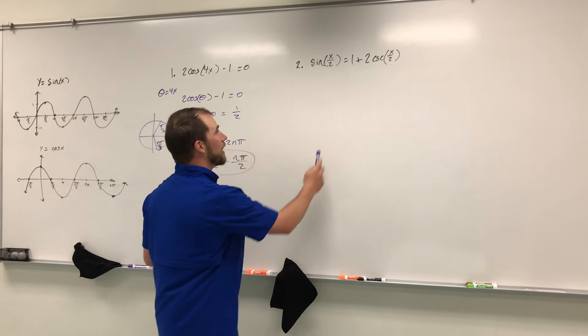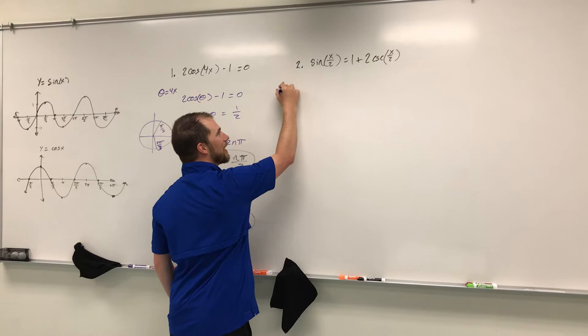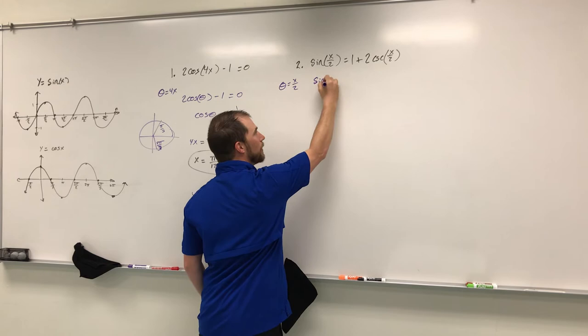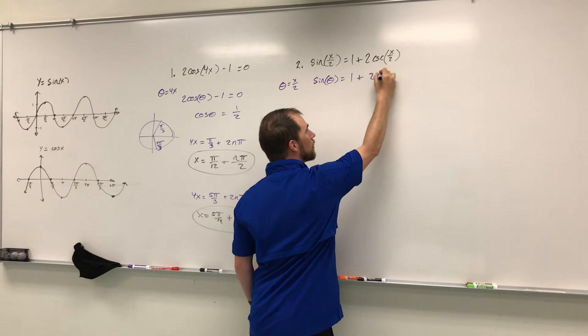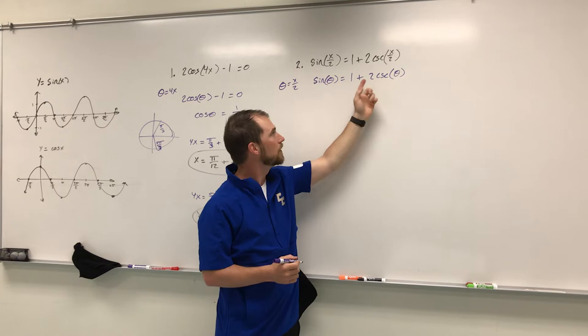For the next problem, we have x over 2, and both terms match, so we can solve this without using any additional formulas. Again, I'll let theta equal x over 2 to make it look simpler. This gives us sine theta equals 1 plus 2 cosecant theta. We have both sine and cosecant, so let's change cosecant to 2 over sine, giving sine theta equals 1 plus 2 over sine theta.